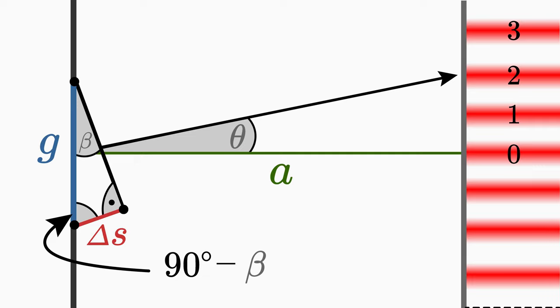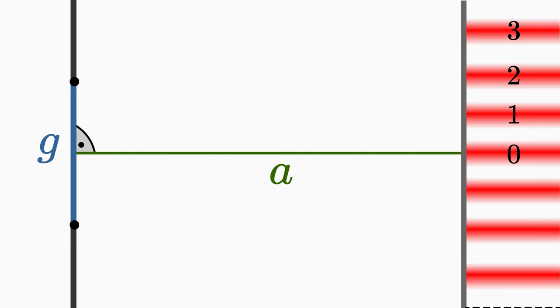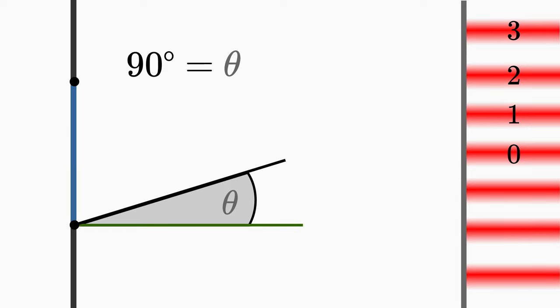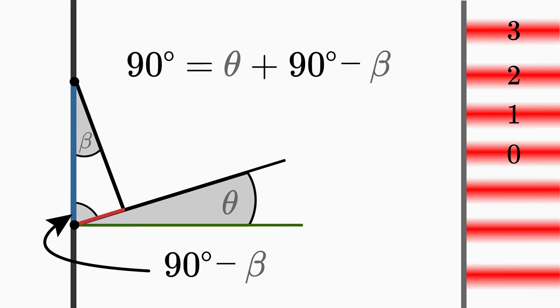The angle between a and g is, as you can see, 90 degrees. These 90 degrees are composed of the angle theta and 90 degrees minus beta. From this follows theta is equal to beta.